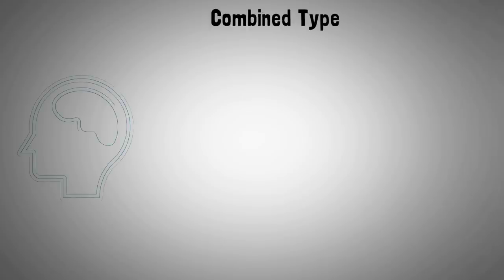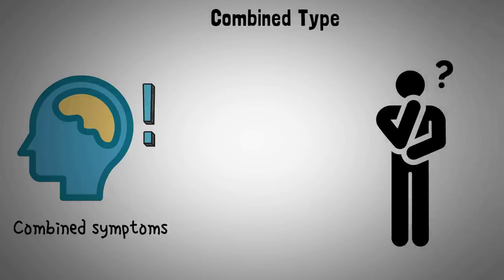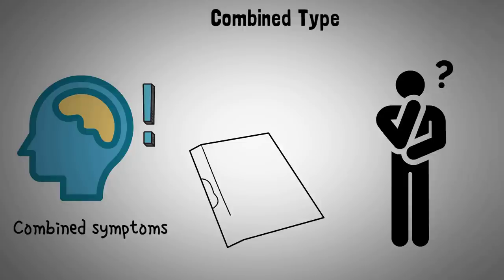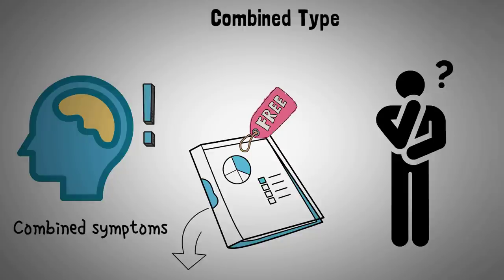Lastly, there is the combined type. Although people with ADHD all have some sort of neurodevelopmental issues, these issues range, and so do the symptoms. A person diagnosed with combined type ADHD may display any combination of the symptoms mentioned above. This is one of the things that makes ADHD so tricky to diagnose, especially in adults. I've also created a free ADHD test on my website — click the link in the description below to take it and see if you have any ADHD tendencies.